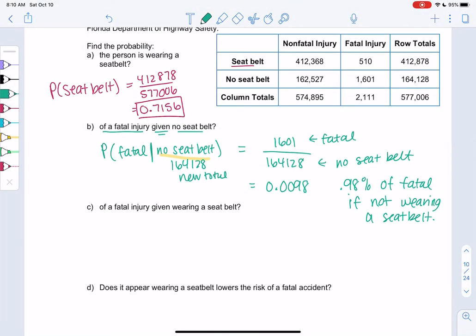What's the probability of a fatal injury given wearing a seatbelt? P of fatal given seatbelt. We're going to do the same thing. Now we only look at the seatbelt row, we ignore the rest, and then we look at fatal.